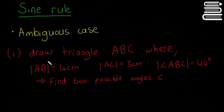The example is asking us to draw a triangle ABC, where the length of AB is 4 centimetres, AC is 3 centimetres. And these symbols mean the size of the angle ABC, which is 44 degrees. So between point A and point B is 4 centimetres, between point A and point C is 3 centimetres, and the size of angle ABC is 44 degrees.